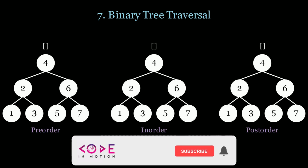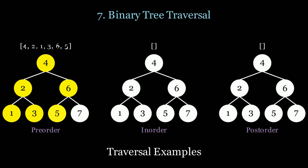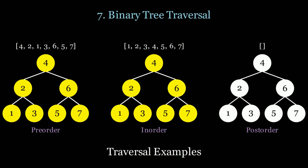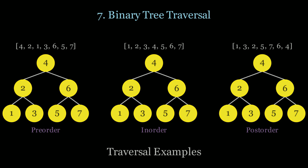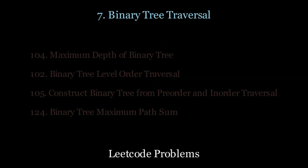In pre-order traversal, we scan the node before the children: 4, 2, 1, 3, 6, 5, 7. In in-order traversal, we scan the leftmost child, then the current node, then the right child: 1, 2, 3, 4, 5, 6, 7. In post-order traversal, we scan children before the node: 1, 3, 2, 5, 7, 6, 4. In BFS, we scan level by level: 4, 2, 6, 1, 3, 5, 7. For more practice, look at the following LeetCode questions.